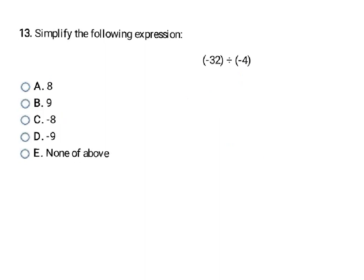Now I'm looking at another division problem. I have negative 32 divided by negative 4 — they are both the same sign. Two negatives make a positive in multiplication and division, so it can't be C or D. I look at it: 32 divided by 4 is 8. So it has to be positive 8, and that's my final answer A.